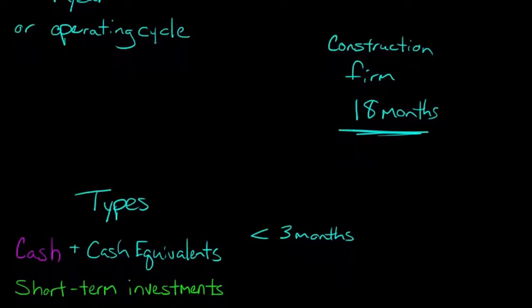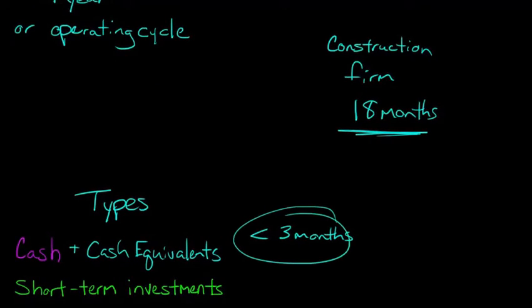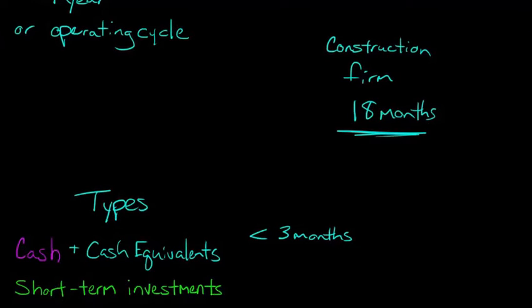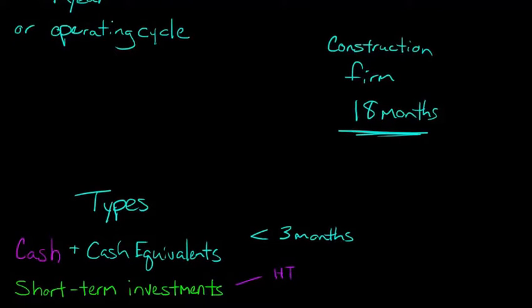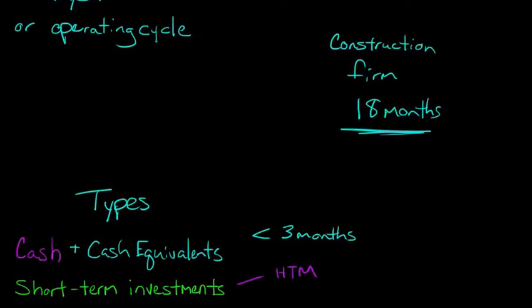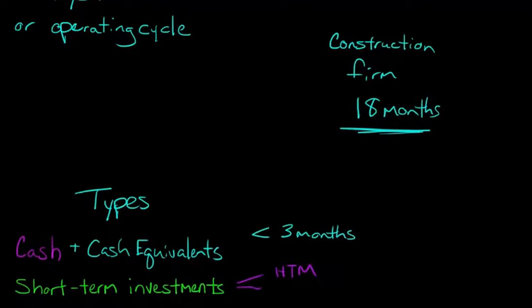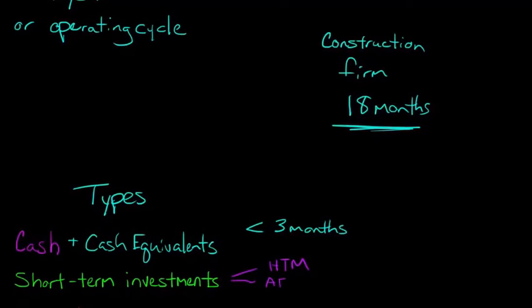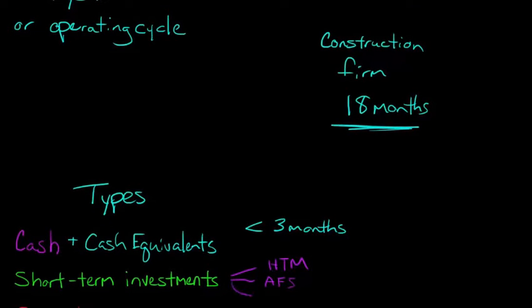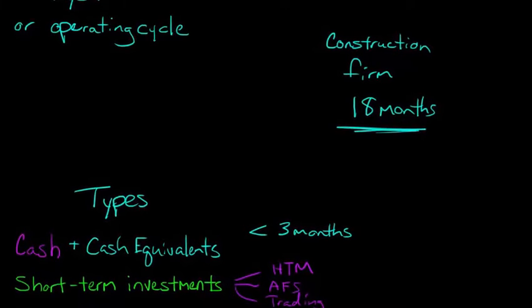And then also short-term investments. Now, we're not talking about this within three months in highly liquid variety. Now we're talking about three different things. And let me just, I'll change colors here. So we think about held to maturity securities, so like a bond, for example. We also think about available for sale securities. We also think about trading securities, a stock that the firm intends to trade for a profit. So short-term investments are also a current asset.